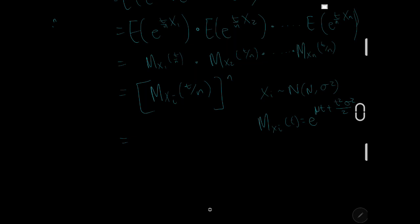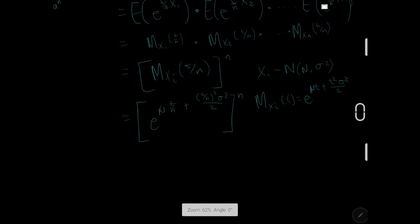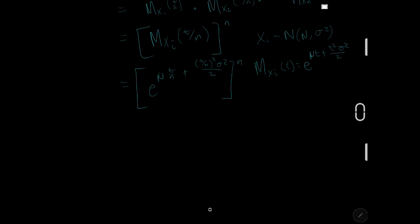Because we assume that each xi is normally distributed with mean mu and variance sigma squared, the MGF of xi at t is e to the mu*t plus t-squared*sigma-squared over 2. We're evaluating this at t/n, so the exponent becomes mu*(t/n) plus (t/n)-squared * sigma-squared over 2, all raised to the power of n. Cleaning this up: e to the one-over-n * mu*t plus t-squared*sigma-squared over 2*n-squared, all to the power of n.